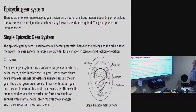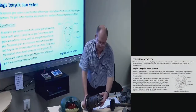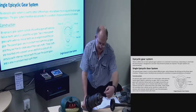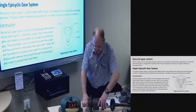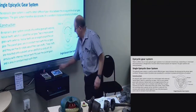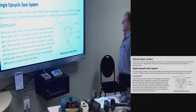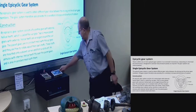There are either one or more epicyclic gear systems in automatic transmission, depending on what load the transmission is designed for and how many forward speeds are required. The gear systems are interconnected. A single epicyclic gear system has only one sun gear, one annulus, and one set of planetary gears with a planetary carrier. The epicyclic gear system is used to obtain different gear ratios between the driving and driven gear members, and also provides for variation in torque and direction of rotation.